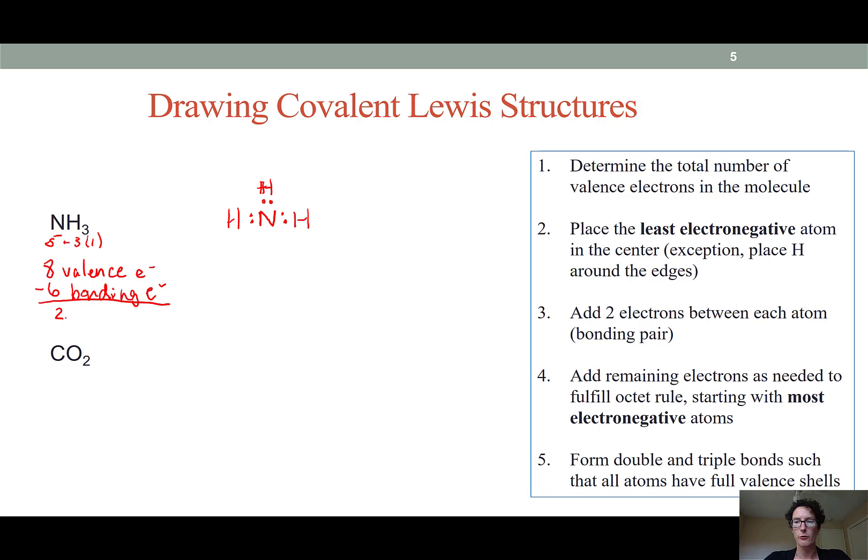So what am I going to do with those? Step four says add the remaining electrons as needed to fulfill the octet rule beginning with the most electronegative atoms. Hydrogen has a duet, and by having our hydrogen bonded to nitrogen each hydrogen already has a duet. But I do need to ensure that my nitrogen has an octet and right now it only has six electrons. So I'll add my last two electrons just onto the nitrogen atom as a lone pair.